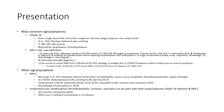MIS-C CDC case definition requires: age less than 21 years old, fever, evidence of inflammation, and evidence of clinically severe illness requiring hospitalization with multi-system organ involvement. No alternative diagnosis, plus recent or recurrent SARS-CoV-2 infection by RT-PCR, serology, or antigen test, or COVID-19 exposure within four weeks prior to onset of symptoms.